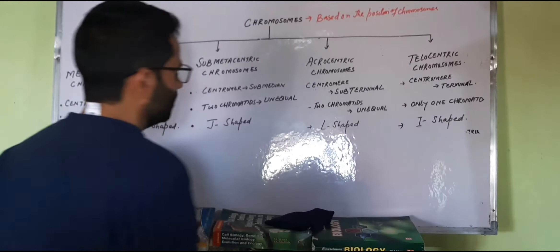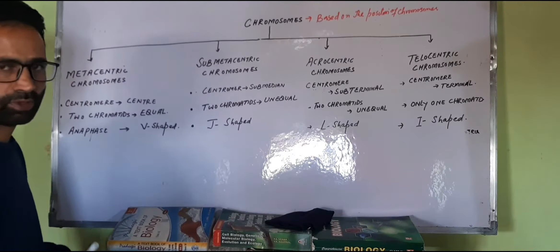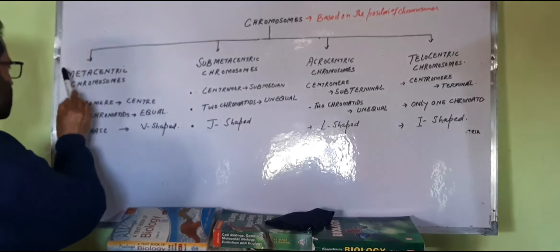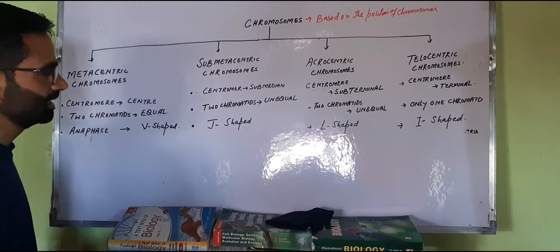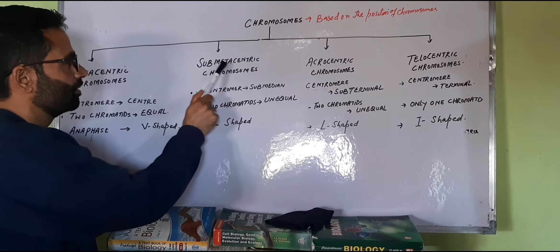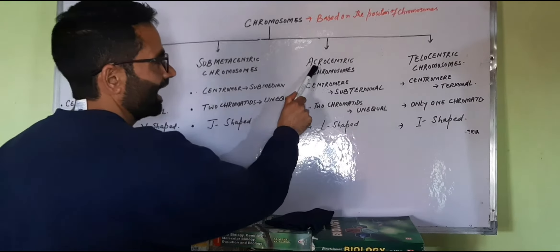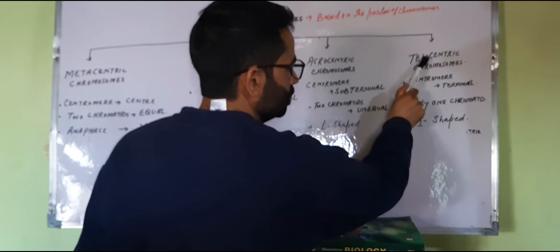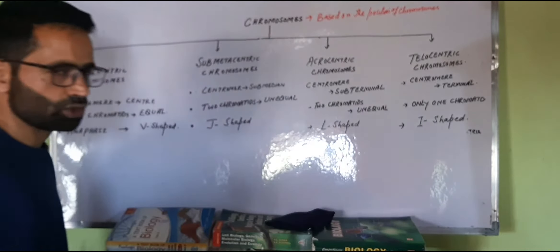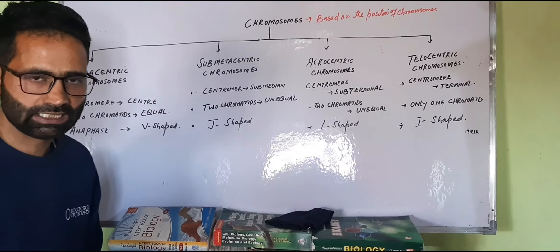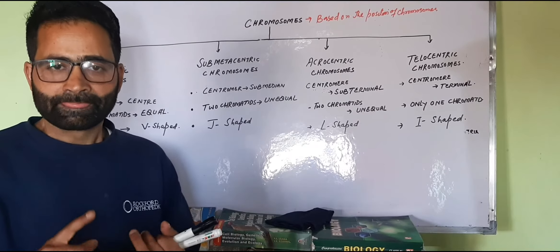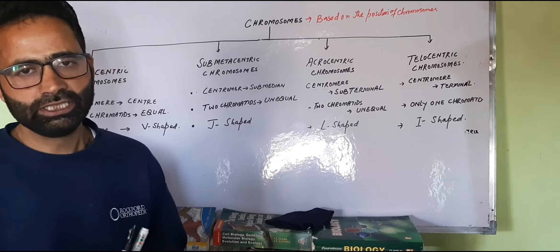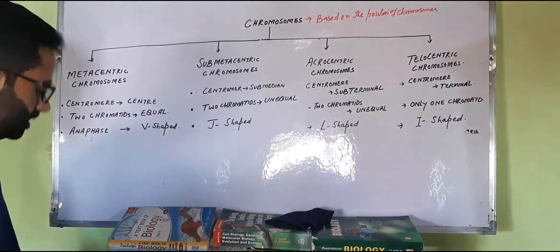There are four types of chromosomes or four classes of chromosomes. The first one is called the metacentric chromosome, the second one is called the sub-metacentric chromosome, the third one is acrocentric chromosome, and the fourth last one is called the telocentric chromosome. So there are four classes: metacentric, sub-metacentric, acrocentric, and telocentric.